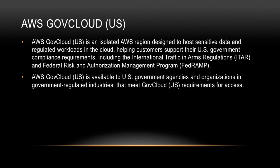AWS also has a specific offering called AWS GovCloud. AWS GovCloud is an isolated AWS region designed to host sensitive data and regulated workloads in the cloud, helping customers support their US government compliance requirements, including the International Traffic and Arms Regulations (ITAR) and the Federal Risk and Authorization Management Program (FedRAMP). AWS GovCloud is available to US government agencies and organizations in government-regulated industries that meet GovCloud requirements for access.